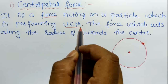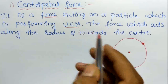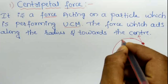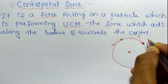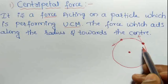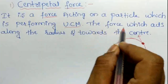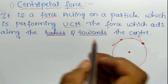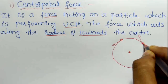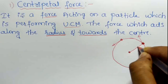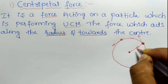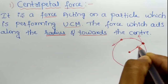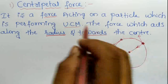In uniform circular motion, the speed is constant but velocity continuously changes. If the particle is at one point, the velocity direction is like this; at another point, velocity direction is different. The force which acts along the radius and towards the center is known as the centripetal force.